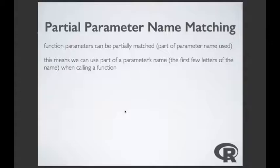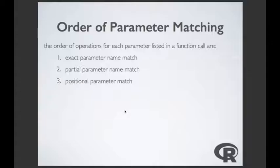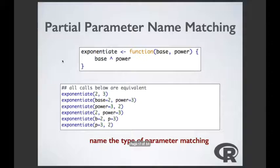Partial parameter name matching: function parameters can be partially matched, meaning only part of the parameter's name is used. The order of parameter matching is: first, exact parameter name match; next, partial parameter name match; then positional parameter matching. The examples make that much easier to understand.